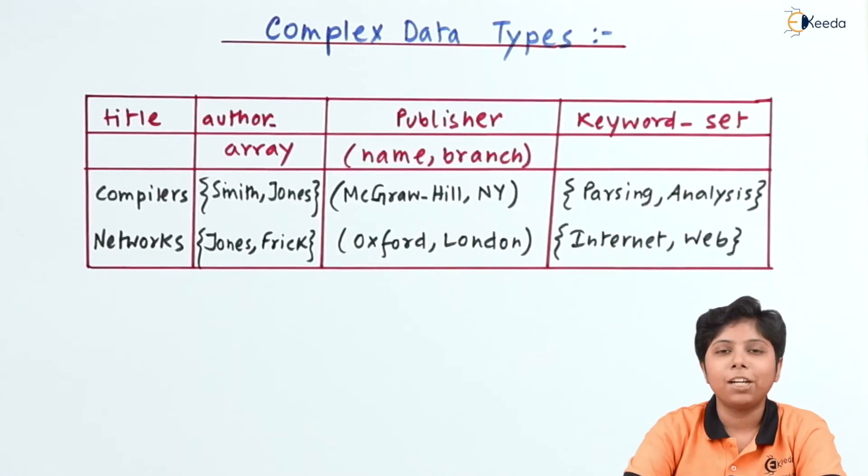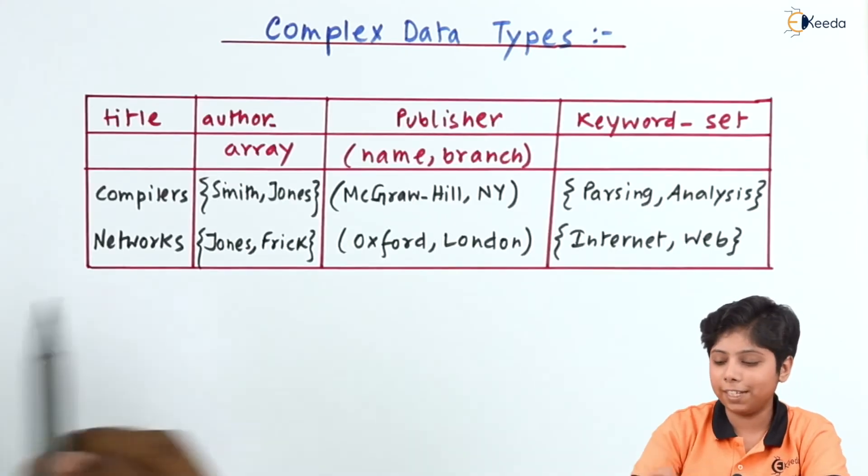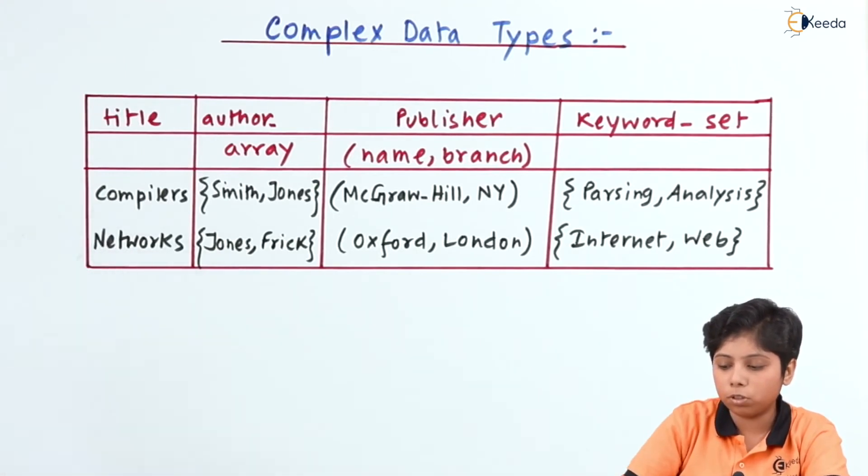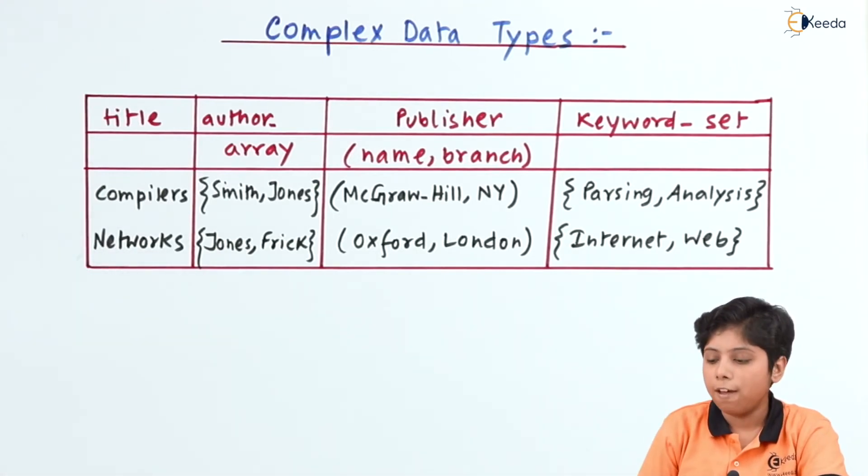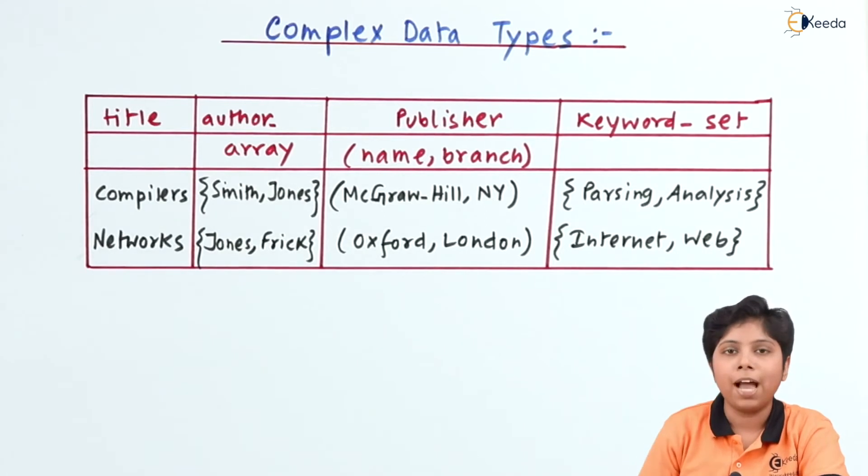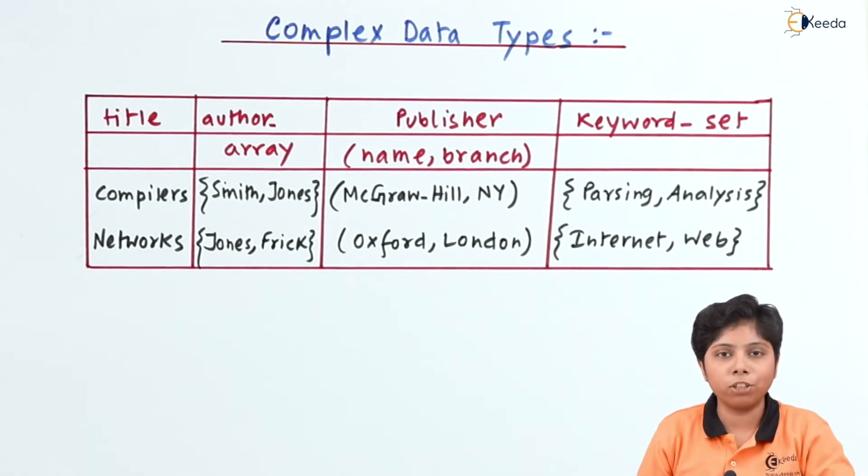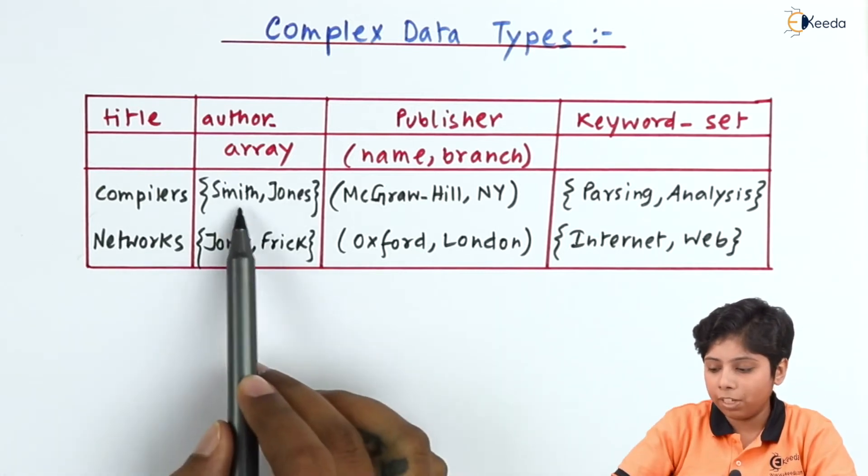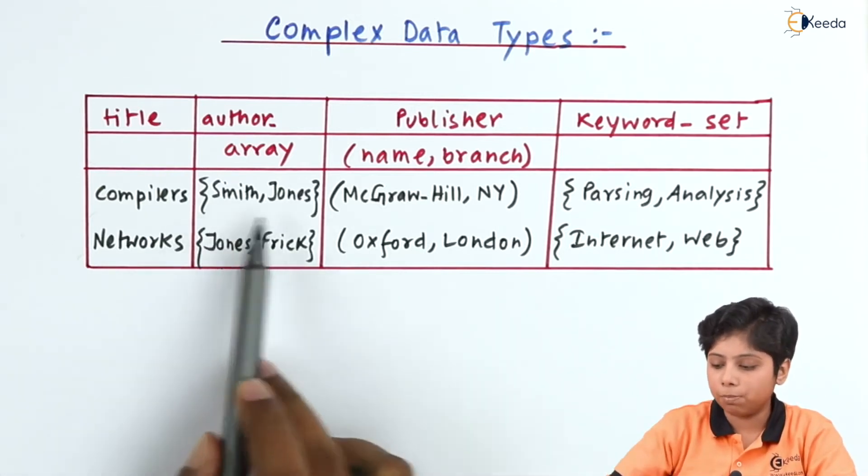Let us look at this example. Now here in this relation, we can see that we have two books: compilers and networks, with author array as a multi-valued attribute. There can be more than one author to a book, so we are giving them as an array, that is Smith-Jones.